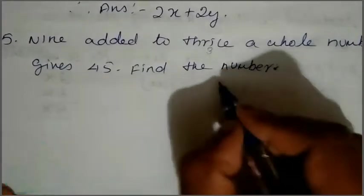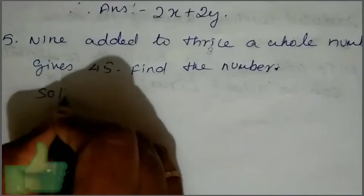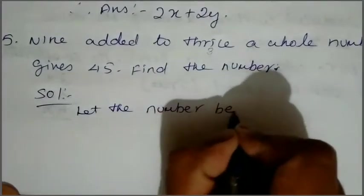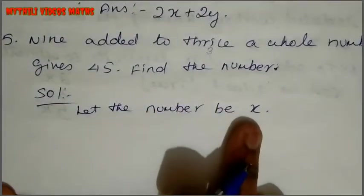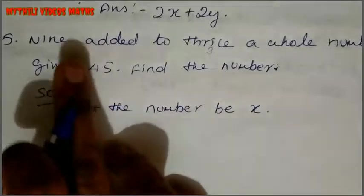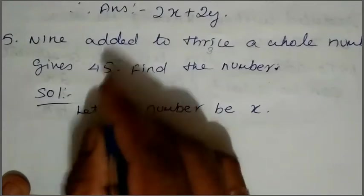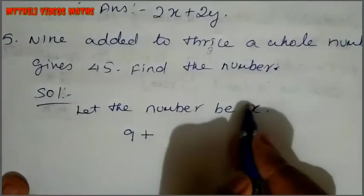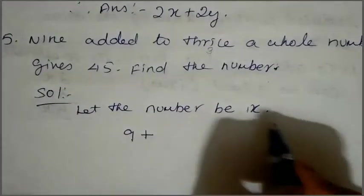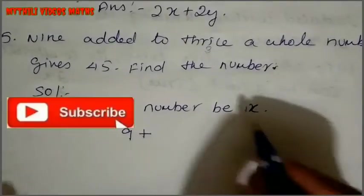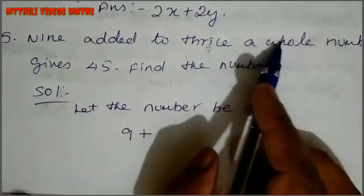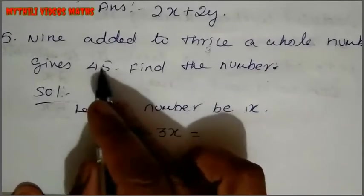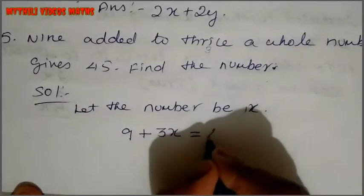How do we find the number? Let the number be x. Nine added, so we can write 9 plus thrice the whole number, 3x, gives 45. So 9 plus 3x equals 45.